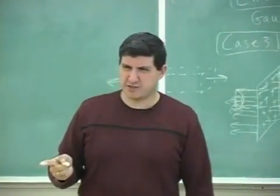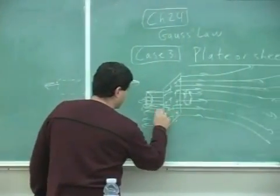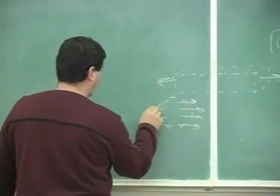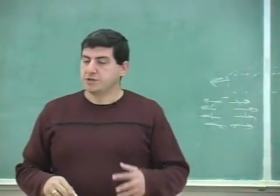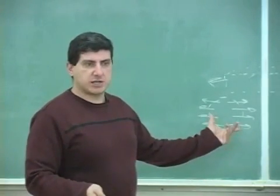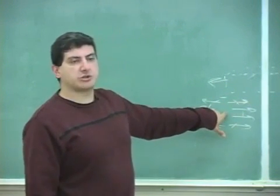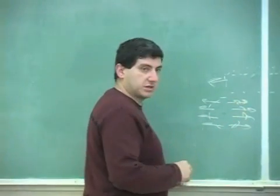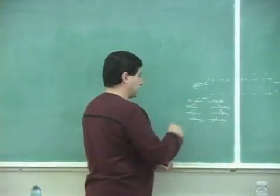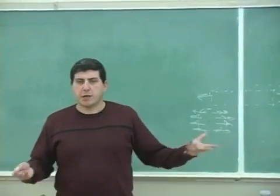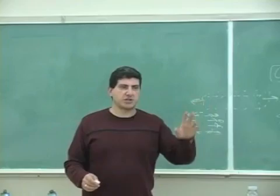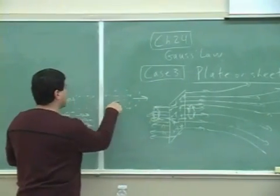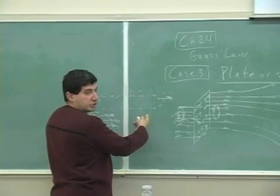You can't choose a spherical Gaussian surface to find the electric field here, because for a sphere the electric field would be coming out at different angles — the angles are not all the same. Gauss's law would still hold for the sphere, saying the flux equals the charge enclosed, but it would not be a helpful way to find E since the angles are all changing. We want a surface where the electric field comes out from the ends only, and no electric field comes out of the sides.